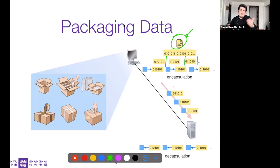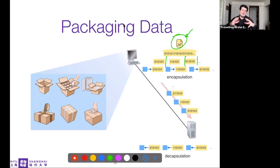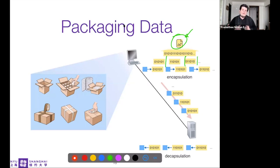Adding the header — the extra information needed — is called encapsulation. At the receiver, you reassemble the pieces by removing the header, checking things like the destination address, and combining the pieces back to reconstruct the file. Reading and removing the header is called decapsulation.